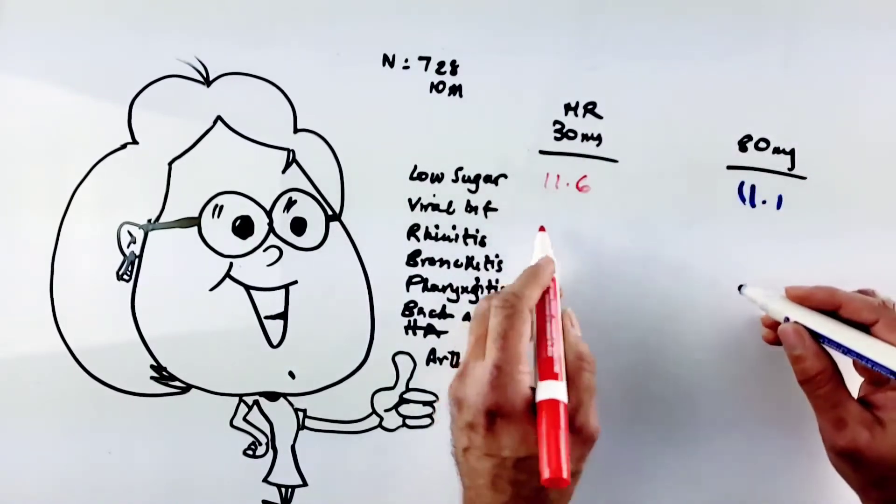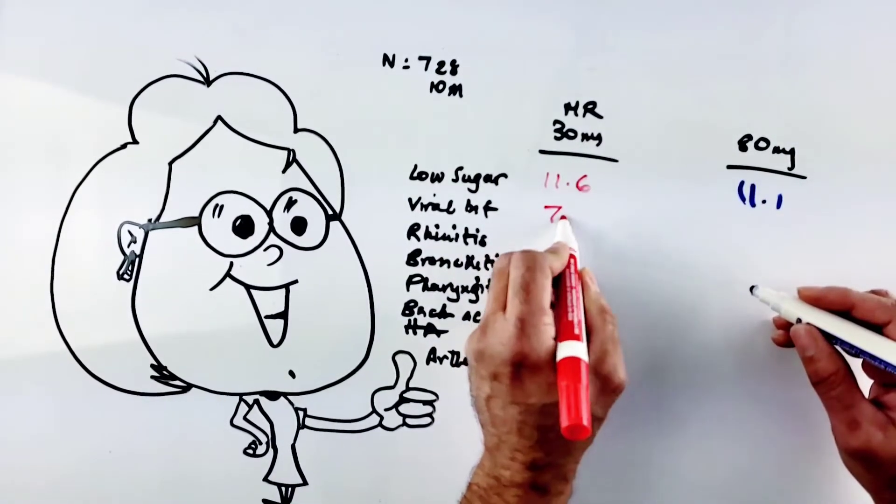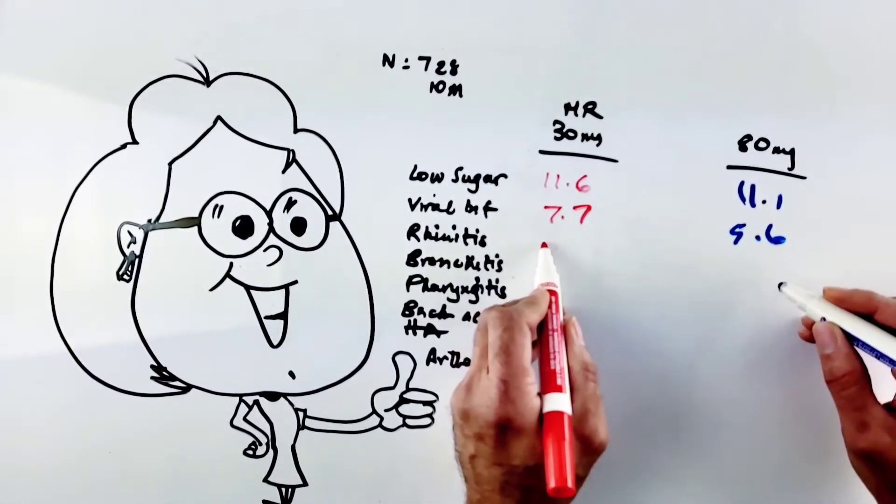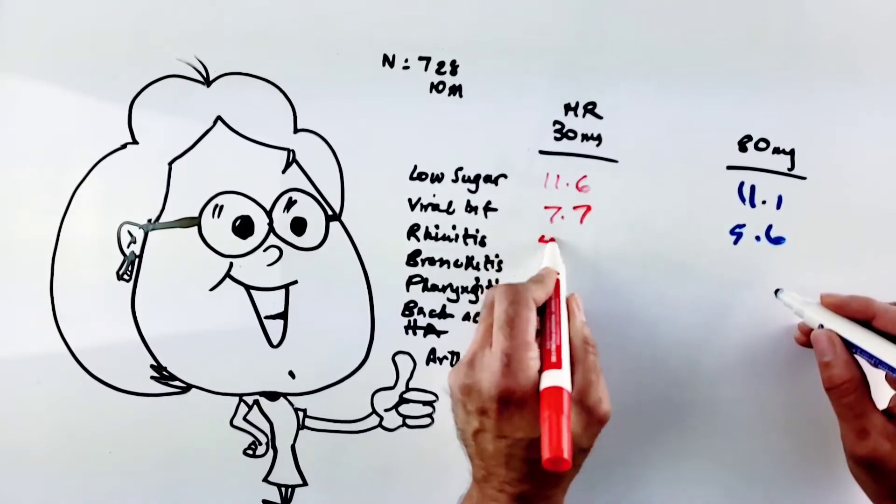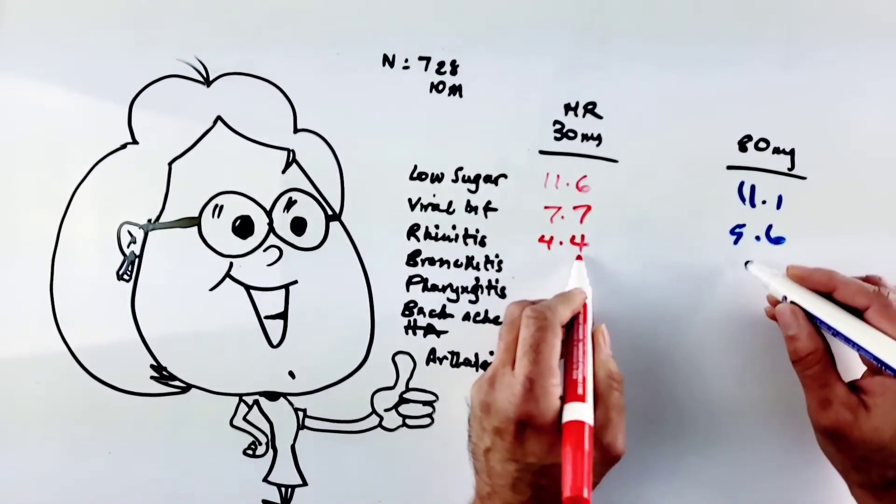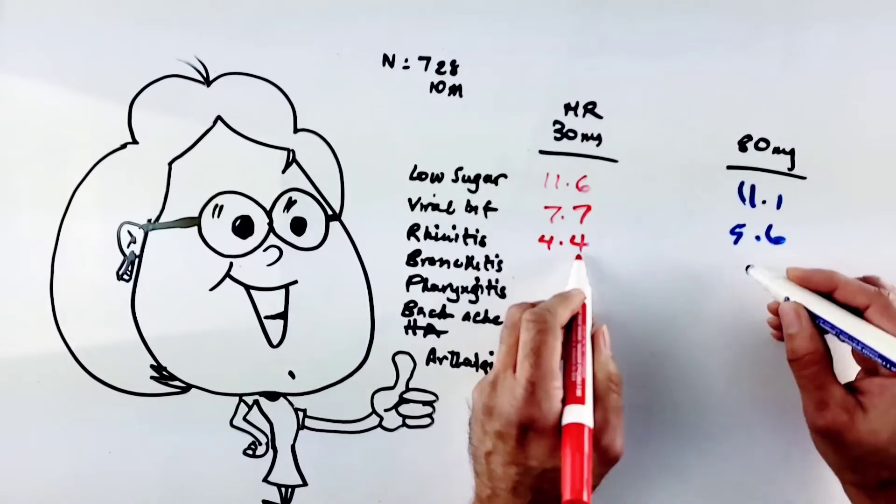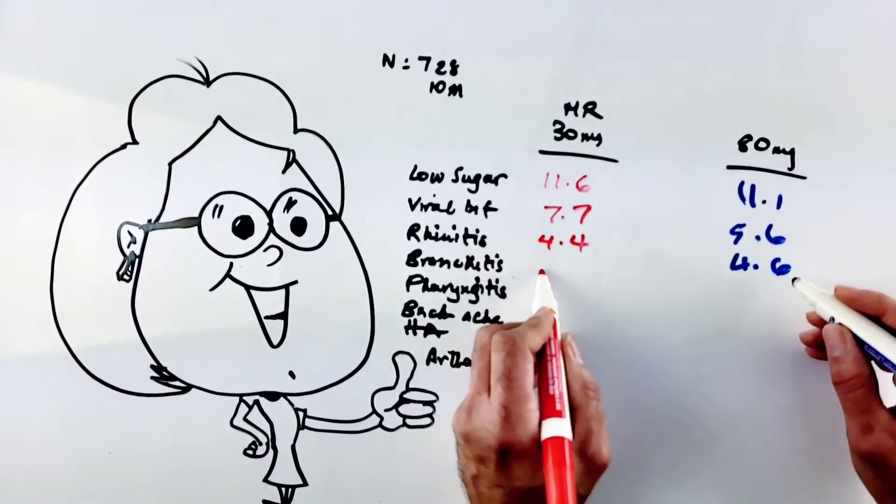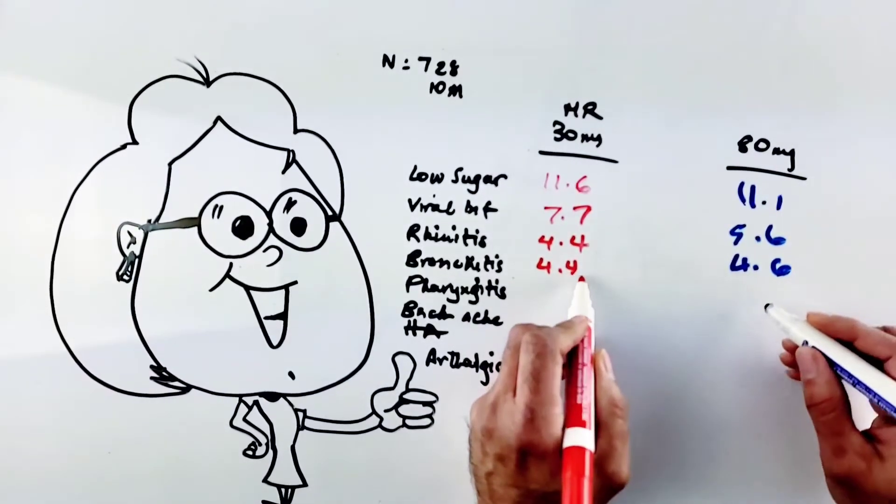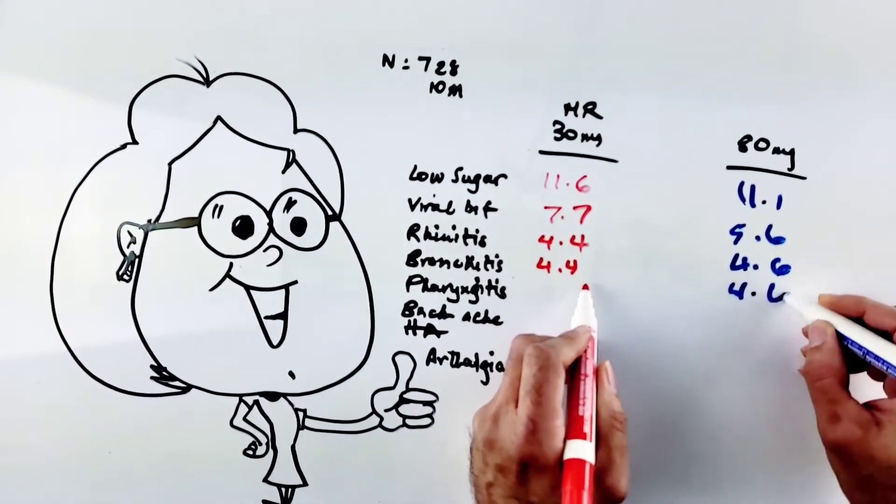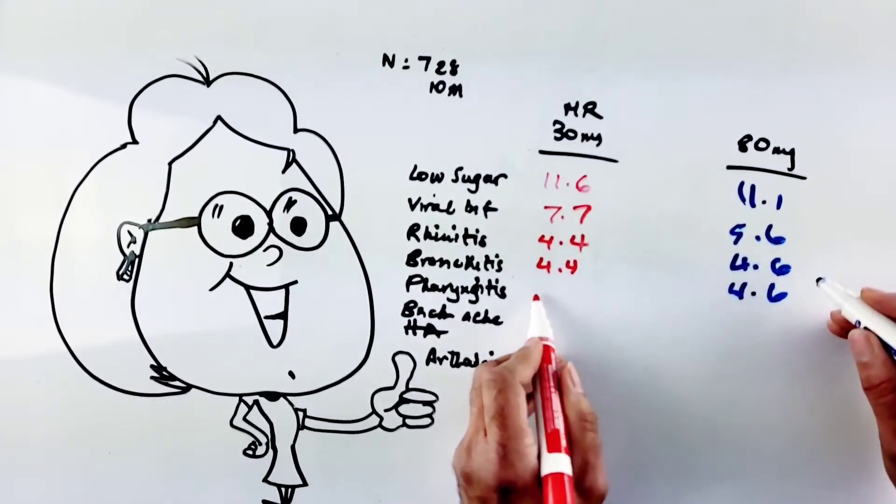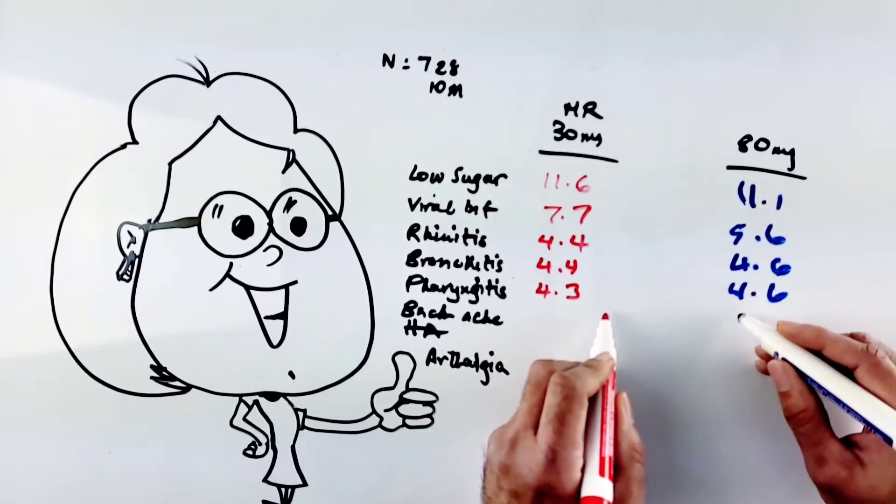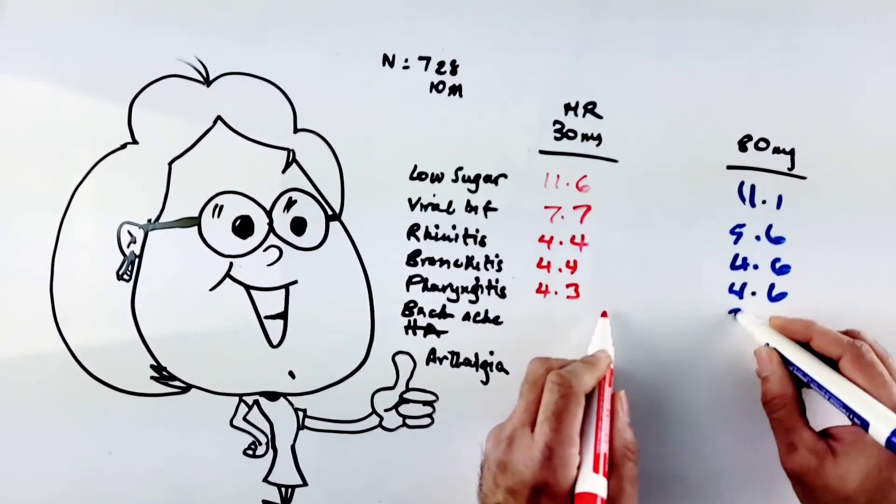Next up was viral infections - common cold 7.7% versus 5.6%. Rhinitis, infections of the nose, irritation and nasal passages 4.4% versus 4.6%, so again very similar. Bronchitis 4.4% and 4.6% in the 80 milligram arm or regular strength. Pharyngitis 4.3% as opposed to 3.5%.